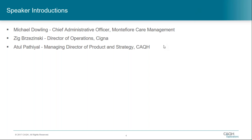Hi, good afternoon. My name is Zig Brzezinski of Cigna Healthcare. I'm the Operations Director at Cigna. At Cigna, we have roughly 800 to 850,000 providers in our system. My area of responsibility is provider data management, demographic management, provider pricing management, as well as credentialing. Michael and I have very similar roles on different sides of the fence, but I think you'll see it melds well together here.